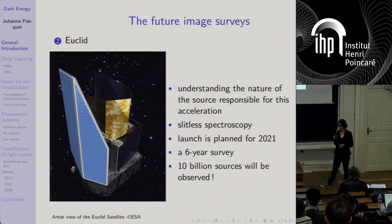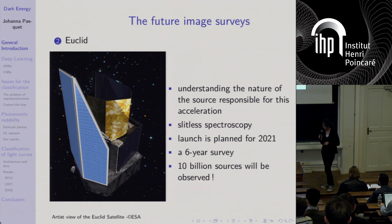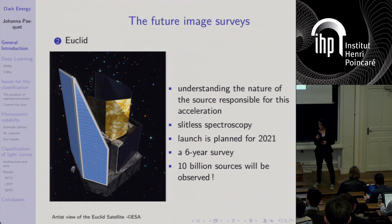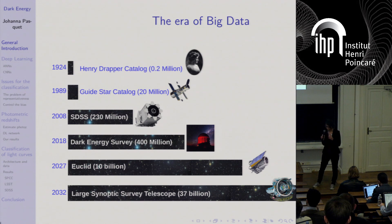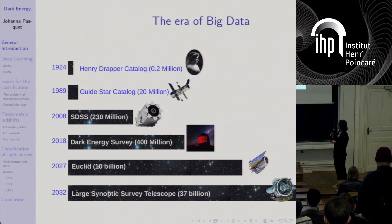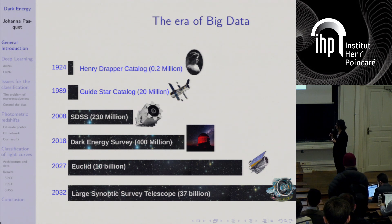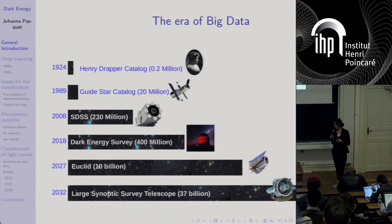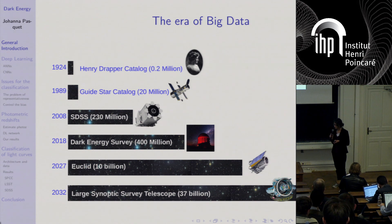We have to develop tools to deal with this quantity of data. Another future survey will be made by Euclid, a satellite that will observe the sky at the same time as LSST for six years, with several billion sources observed. We are entering the era of big data, and the number of data produced is very large compared to previous surveys.